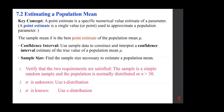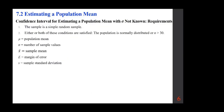If the population is normally distributed, we are in good shape. If it's not, then n must be large — larger than 30, by the Central Limit Theorem. We want to come up with a confidence interval for estimating a population mean when sigma is known. The sample must be a simple random sample, and it must be either normally distributed or n must be larger than 30.